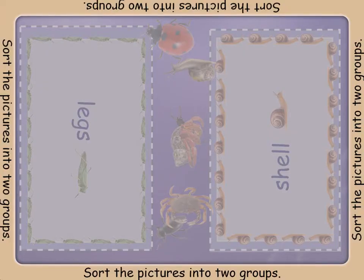You are going to sort the minibeasts into two groups. Look at the two big rectangles. What do you see? Are there minibeasts in the middle that have the same body parts as the minibeast in the rectangles? Drag into the rectangles the minibeast from the middle that has some body part that is the same as the minibeast in the rectangle.